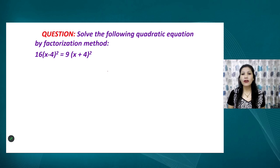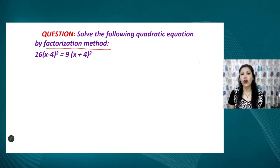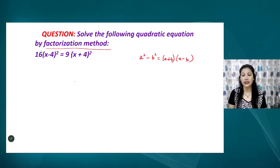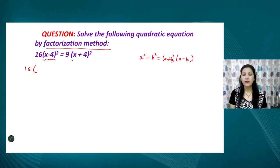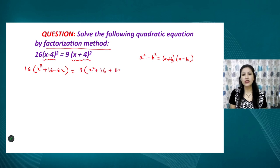Here is a question: solve the following quadratic equation by factorization method. One method we already used previously applied the identity for a² − b², which is (a + b)(a − b). Now let us try solving the same question by another method using (a − b)² and (a + b)². Expanding, we get 16(x² + 16 − 8x) on the left and 9(x² + 16 + 8x) on the right, giving 16x² + 256 − 128x.